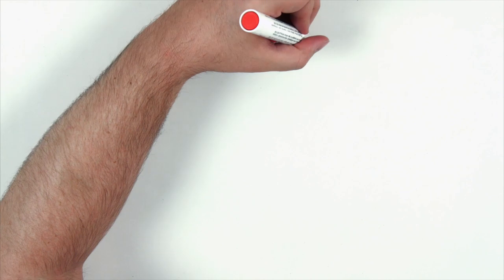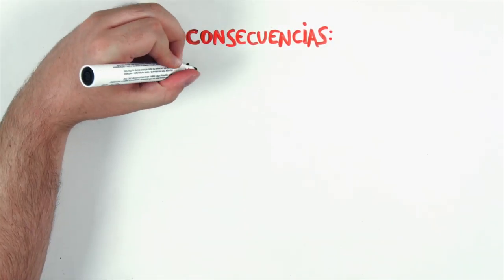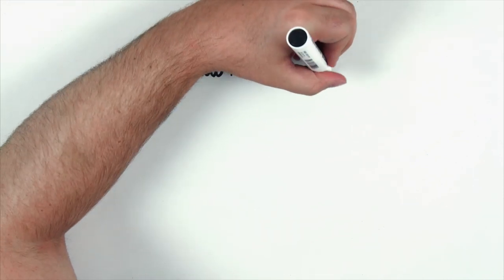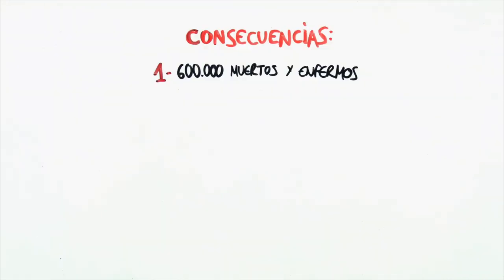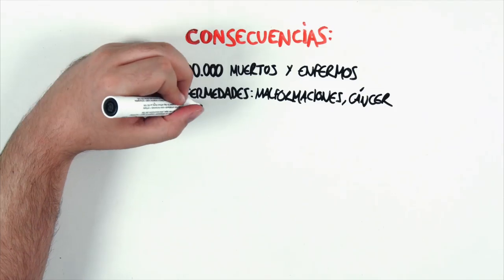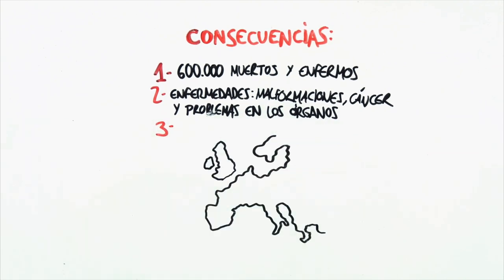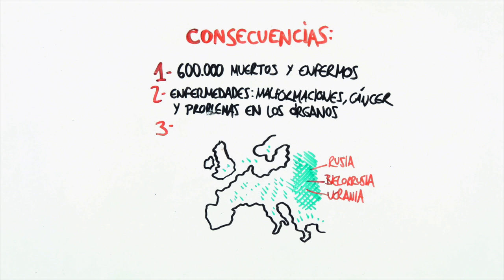Even though at first this accident didn't have any media impact, the consequences had been terrible. 30 people died because of the explosion, but 600,000 got sick or died because of the radiation. The radiation caused malformations, cancer and several sick organs. The radiation spread around a big part of Europe, but the most affected countries were Belarus, Ukraine and Russia.